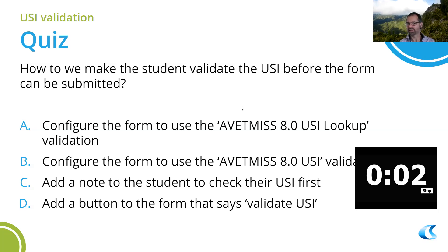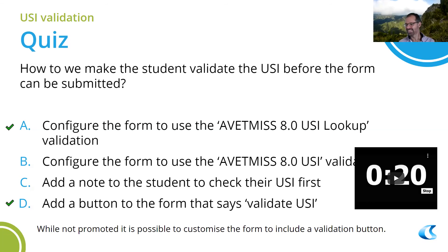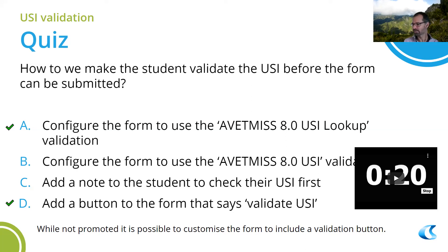The next quiz answer involves options A and D. It is actually possible to put a validate USI button on the form for the customer — even for students — just like you have in the admin area. One issue with that is sometimes the USI validation service is a little slow, and every now and then the validation service gets a bit overwhelmed with the number of requests, so it can take a little time for validation to come through.